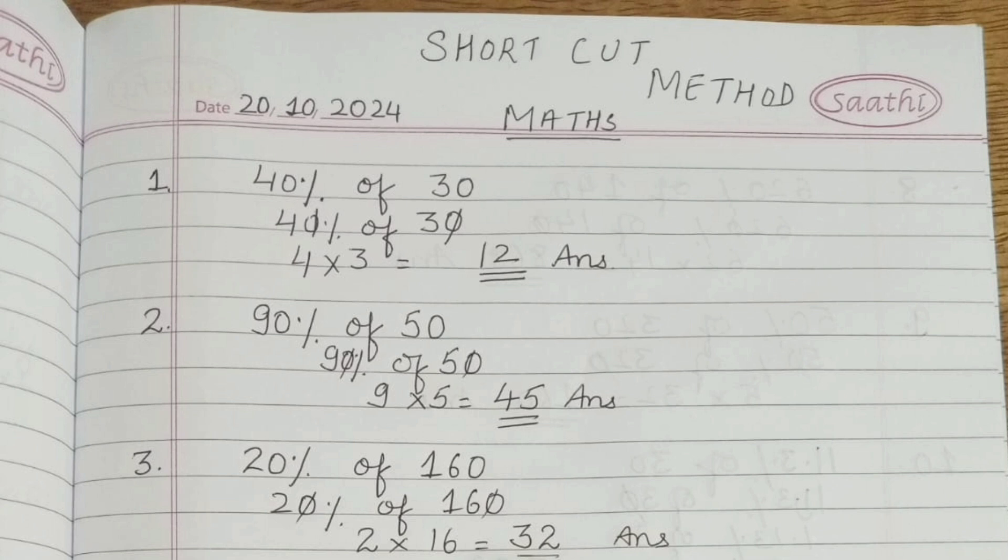The first example is 40 percentage of 30. For 40% of 30, here's the trick: cut down the zeros from both sides, then multiply 4 into 3, and you will get the answer 12.